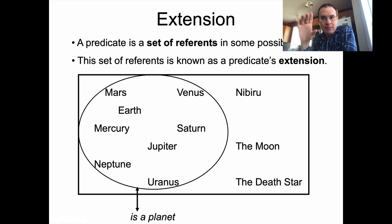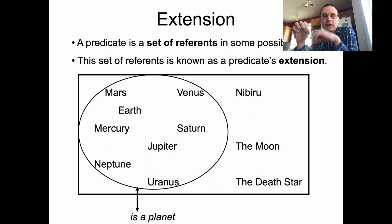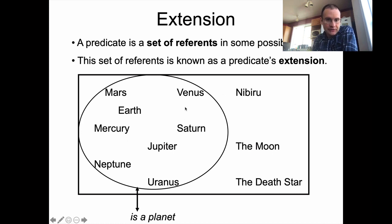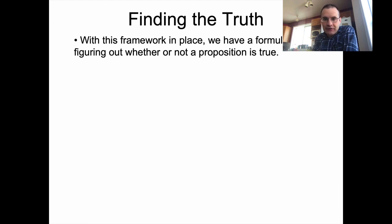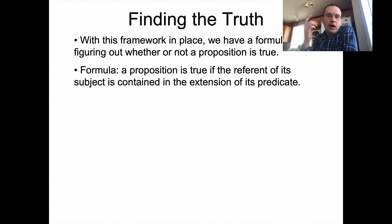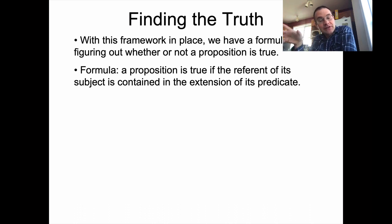The specific things out there in the world or a possible world that a predicate picks out — because a predicate picks out more than one thing. A referring expression, if it's successful, picks out one thing, a referent in a possible world. So with this framework in place, we have a formula: a proposition is true if the referent of its subject is contained in the extension of its predicate.